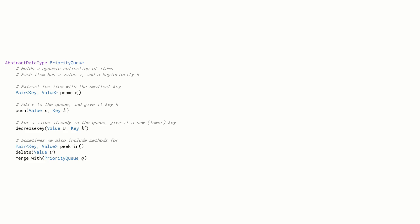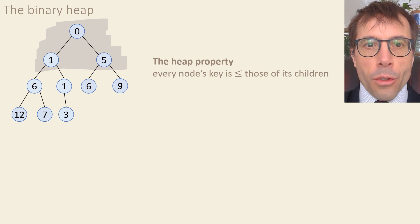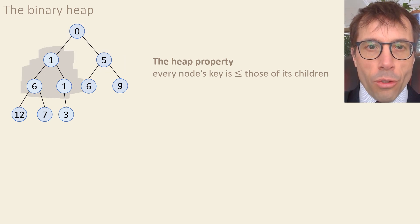Okay, on to our first implementation, the binary heap. A binary heap is an almost full binary tree, every level full apart from the bottom. And it satisfies the heap property, which says every node's key is less than or equal to those of its children. So for example, 0 is less than 1 and 5, 1 is less than or equal to 6 and to 1, and so on.